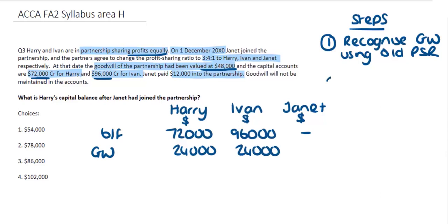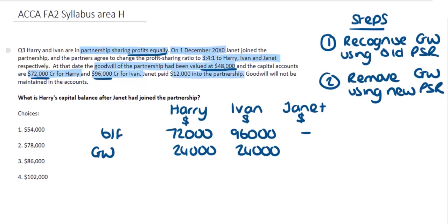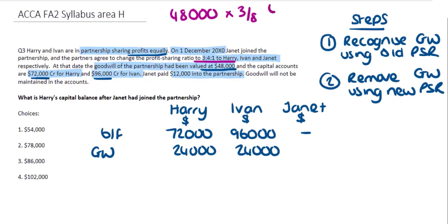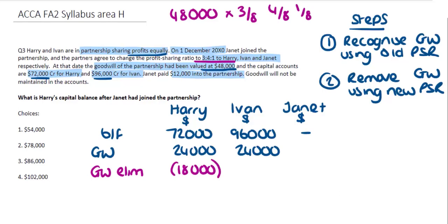The second step is to remove goodwill using the new profit share ratio. The new ratio is 3:4:1 for the three partners, so three plus four plus one equals eight. We multiply by three eighths, four eighths and one eighth respectively. For Harry, three eighths of $48,000 is $18,000. For Ivan, four eighths of $48,000 is $24,000. These amounts are deducted from the capital accounts.